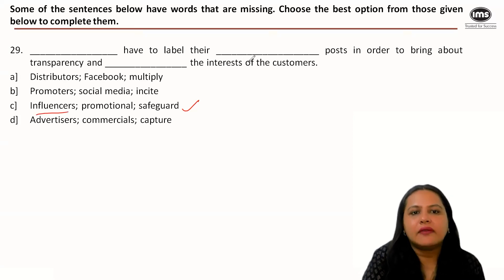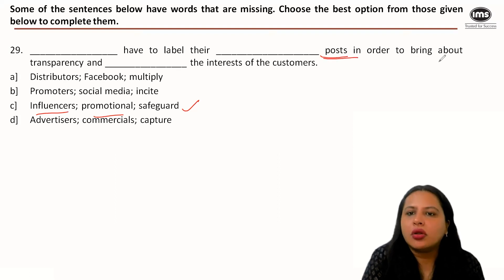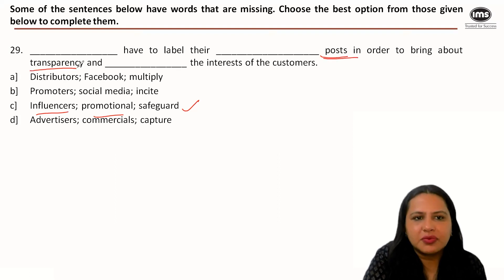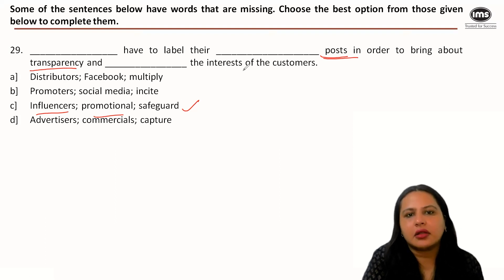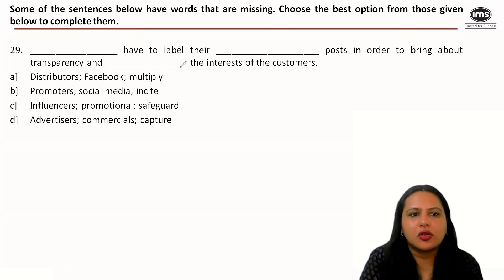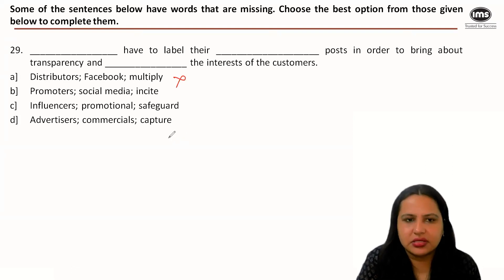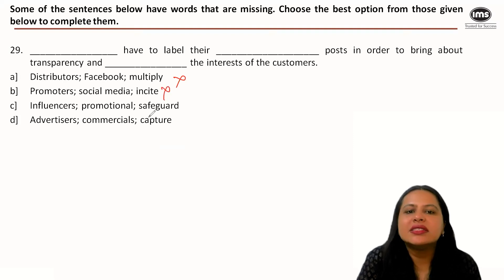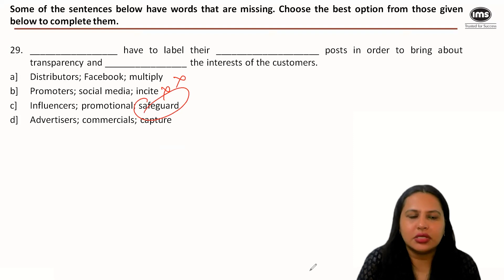Influencers have to label their promotional posts in order to bring about transparency and safeguard the interest of the consumer. You don't multiply or incite the interest of the consumer, so the correct collocation is option C.